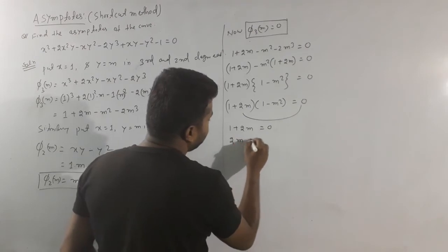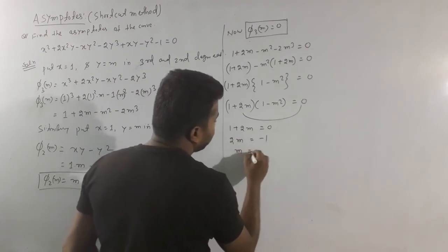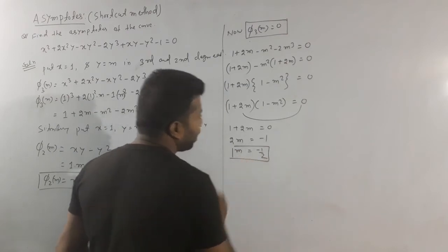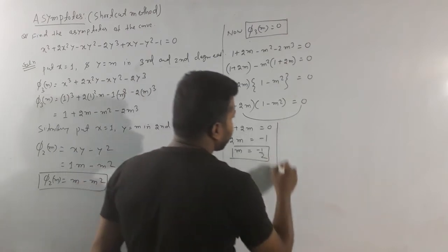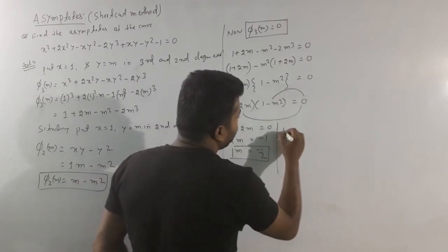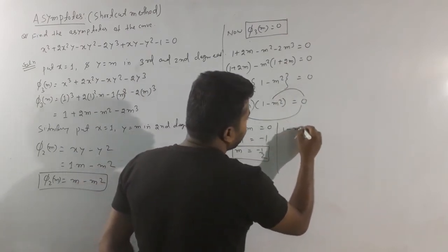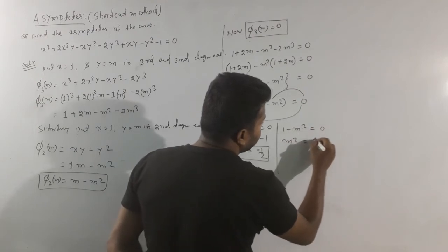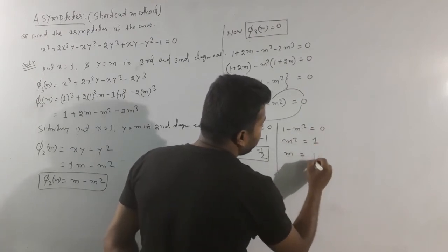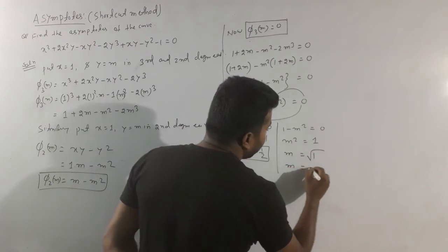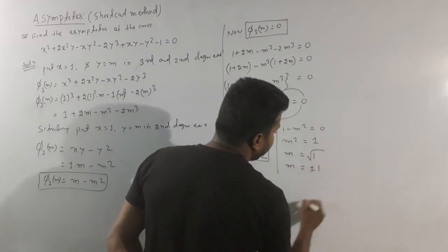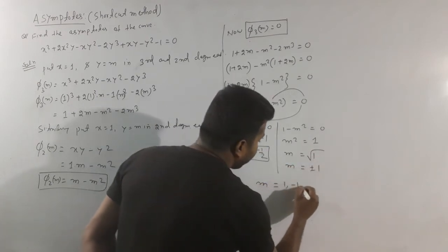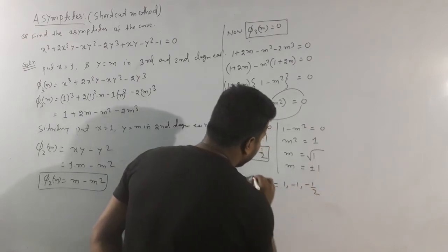From 1 + 2m = 0: m = -1/2. From 1 - m² = 0: m² = 1, so m = ±1. Therefore we have three values of m: m = 1, m = -1, and m = -1/2.